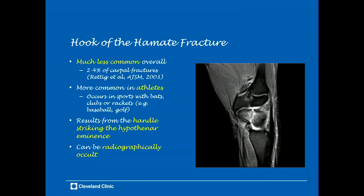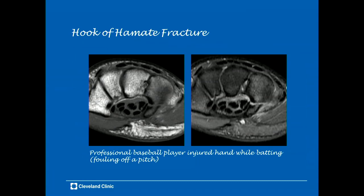A hook of the hamate fracture is another occult fracture where MRI can be particularly useful. It accounts for about 2–4% of all carpal fractures and is more common in athletes who play sports involving bats, clubs, or rackets, as it results from the handle striking the hypothenar eminence and fracturing the hook of the hamate. These can be radiographically occult. Here's a case in a professional baseball player who injured his hand while batting and fouling off a pitch. We can see a disruption of the hook of the hamate at its base on both the T1-weighted and T2-weighted images.